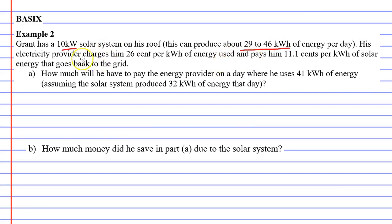So his electricity provider charges him 26 cents per kilowatt of energy used. So let's write that in dollars, so it's $0.26 per kilowatt hour. But they also pay him 11.1 cents per kilowatt hour of solar energy that goes back to the grid. So anything that he doesn't use goes back to the grid, and they will pay him $0.111 per kilowatt hour.